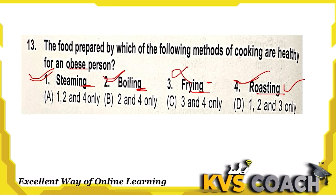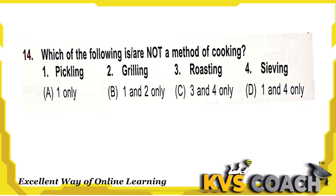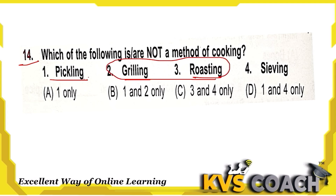Question 14: Which of the following is not a method of cooking? Pickling is a method of preservation; we make pickles and jams using this method. Grilling and roasting are cooking methods. Sieving is a separation method. So only pickling and sieving are not cooking methods. Option D is the right answer.